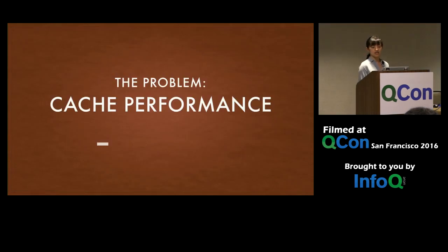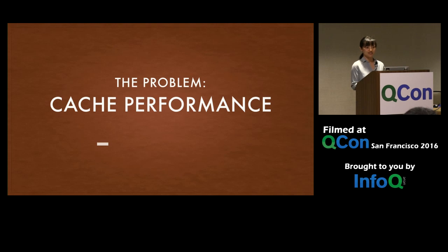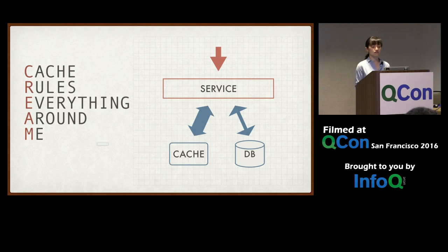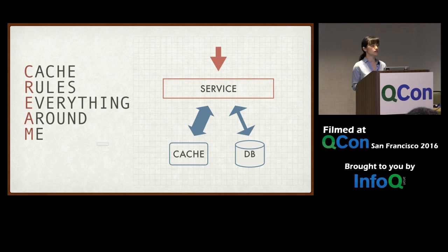I'd like to introduce the problem: cache performance. For many of you that would not seem like a problem — you'd think cache is very fast, very lightweight, a solved problem. But when I talk about cache performance, I mean this: in the happy case, you have some service with a lot of data going in and out, living in a database. The database doesn't provide enough throughput, so you put a cache alongside it to absorb the load. In most cases, that's enough for your entire use case — you just forget it exists.